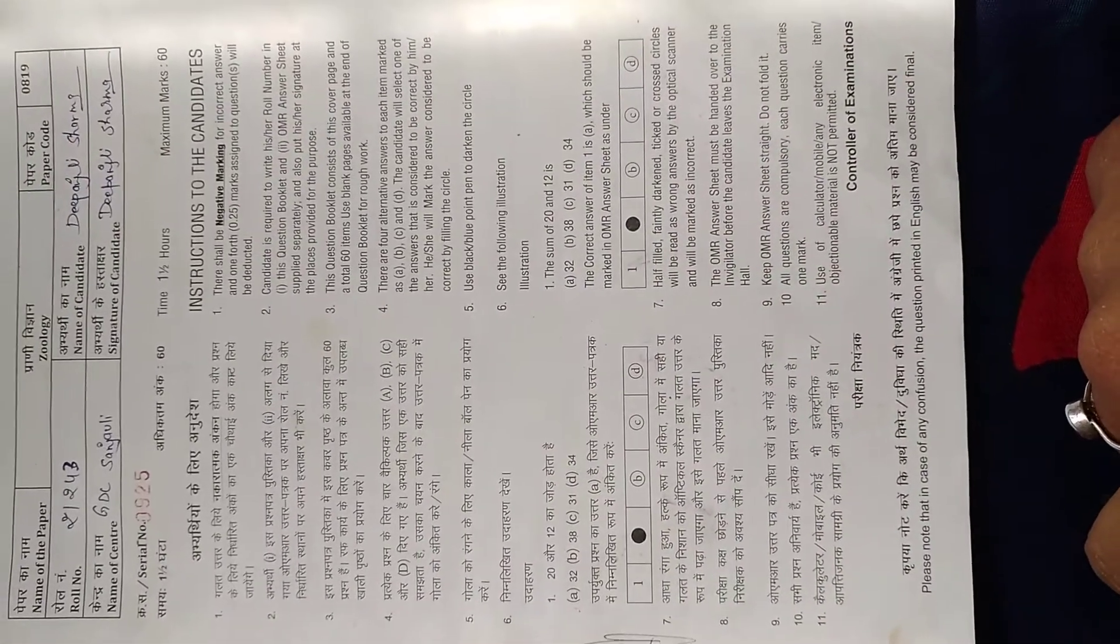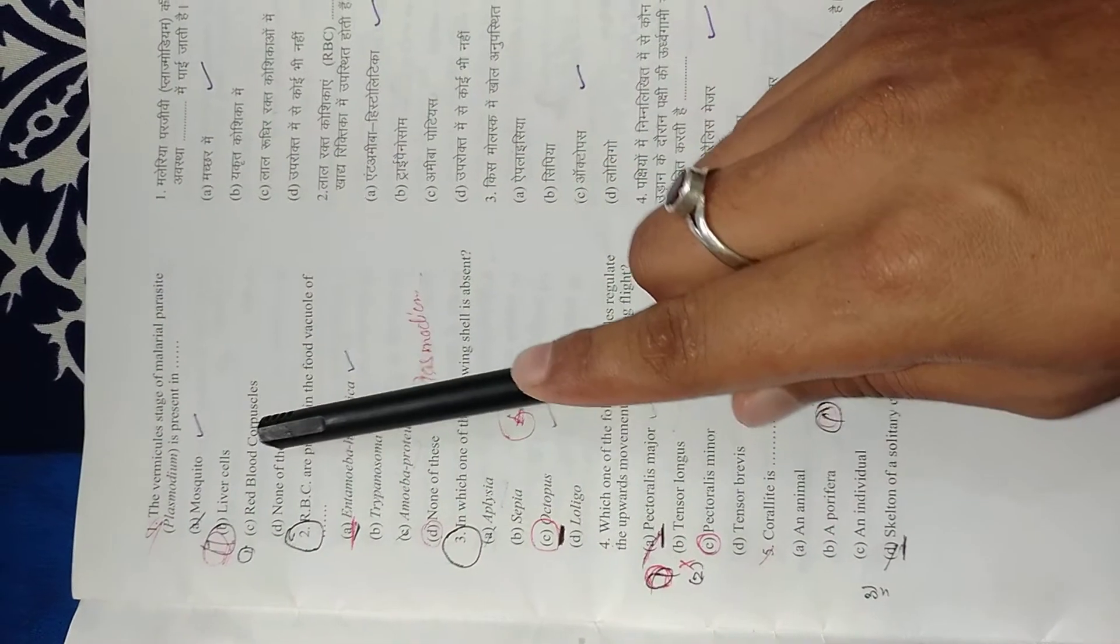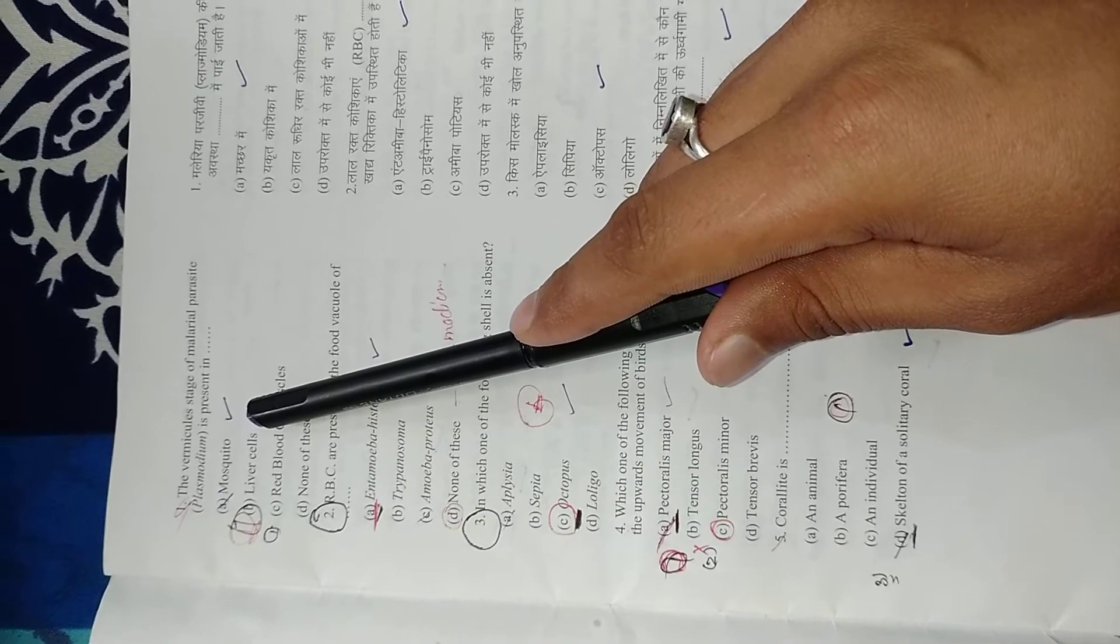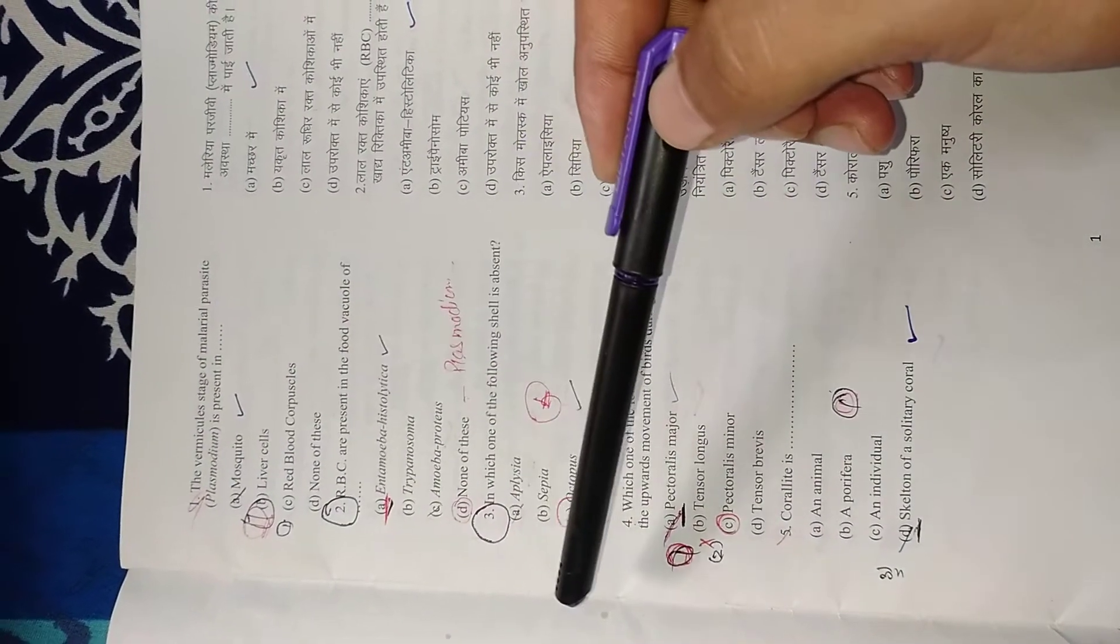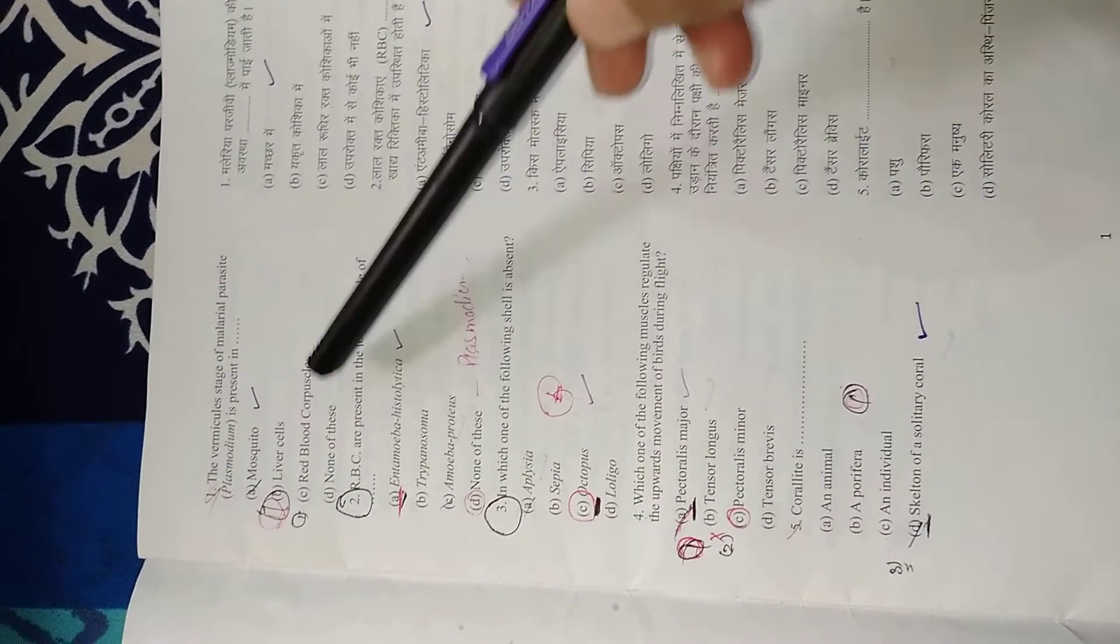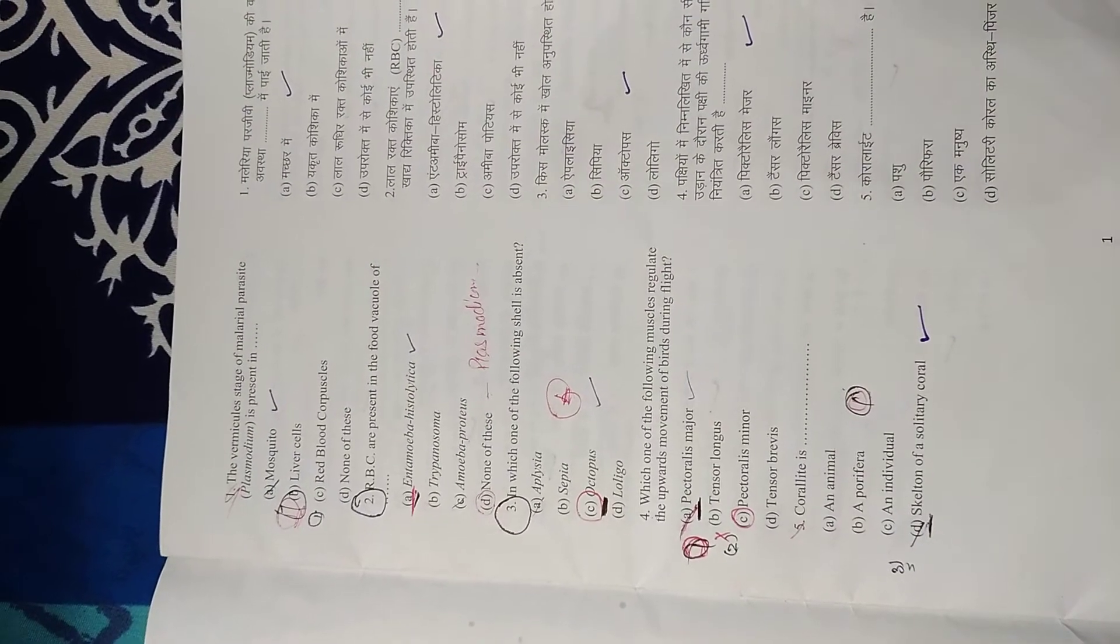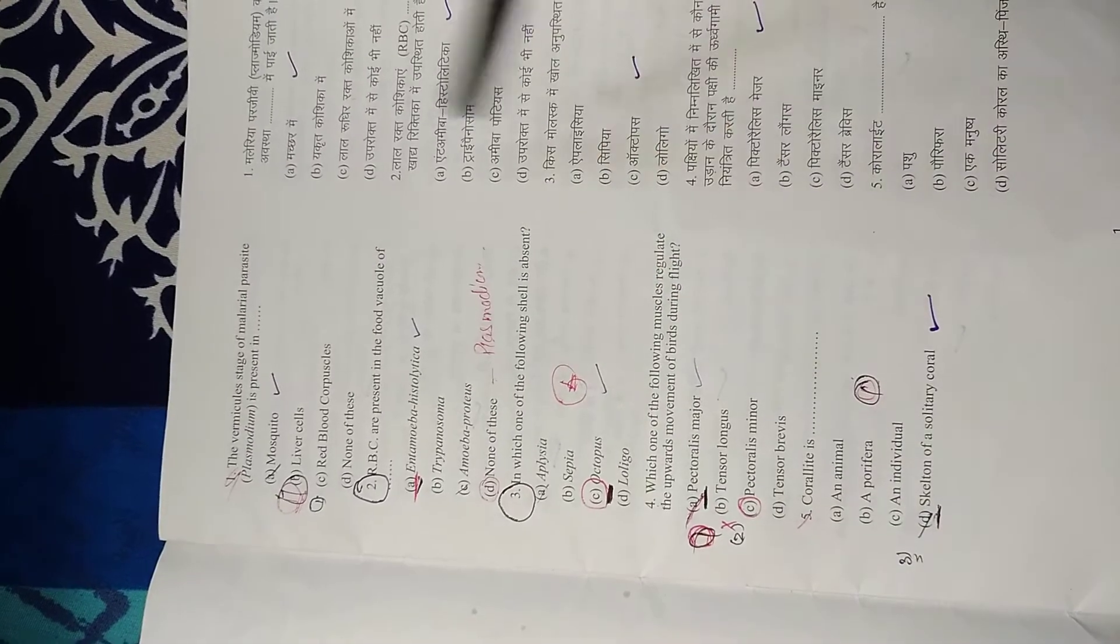Let's start. Question 1: The vermicular stage of malaria parasite is present in? The malaria parasite is Plasmodium, and the vermicular stage is elongated and present in mosquito. So the right answer is mosquito.